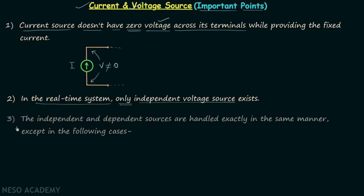Let's now discuss the third point, which is an important point. According to this point, the independent and dependent sources are handled exactly in the same manner.